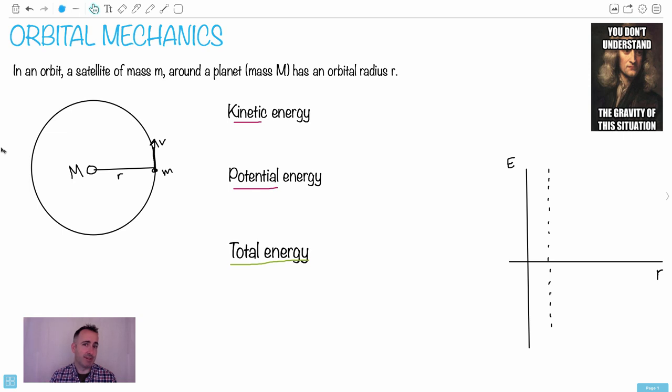For example, the moon is a satellite of the earth. So in an orbit, a satellite of mass m, that's a little mass right here, it's going around a planet of mass capital M and has an orbital radius of R. Now, keep in mind, we're going to assume that the orbits are circular.